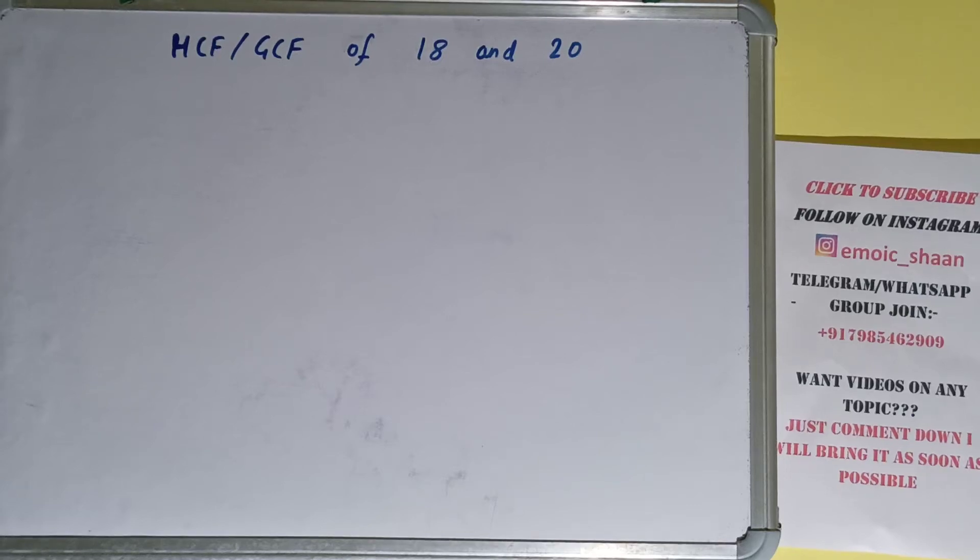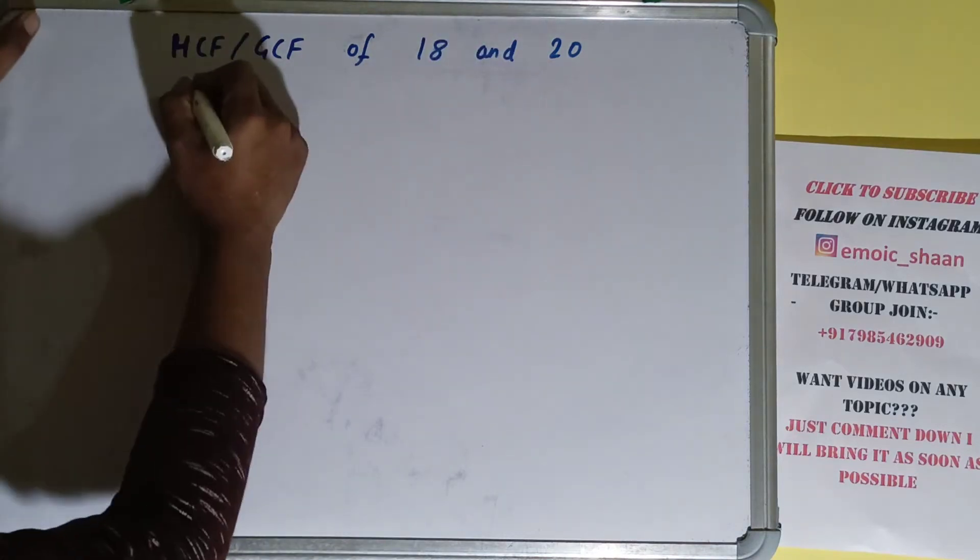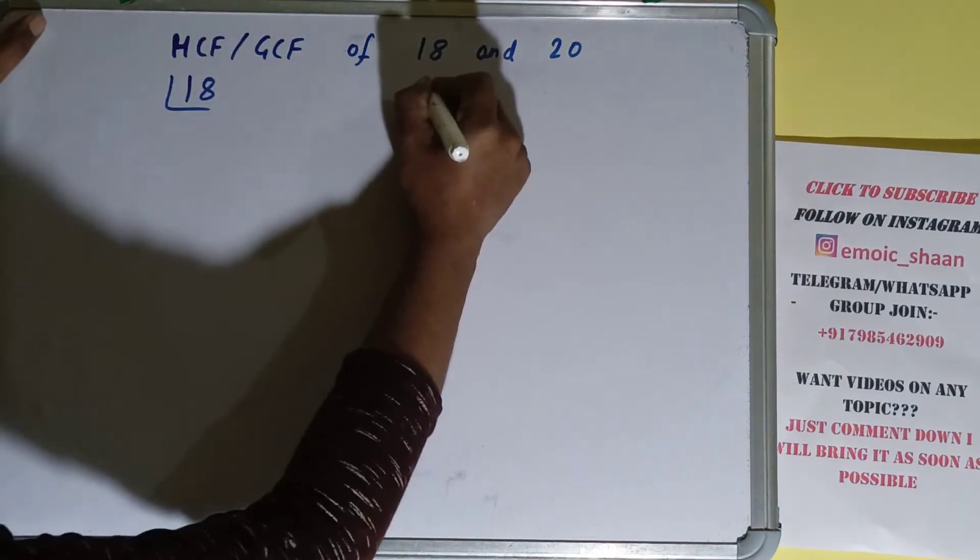Hello friends, in this video I'll be helping you with the HCF or GCF of the numbers 18 and 20. So let's start. To find it out, we first need to write each of the numbers separately and prime factorize each of them.